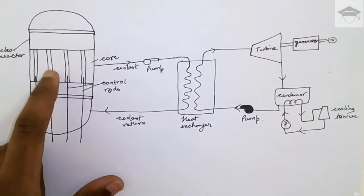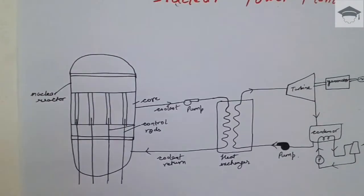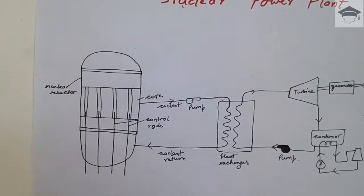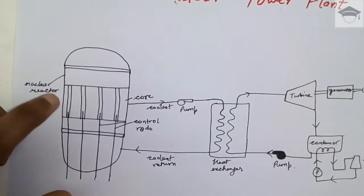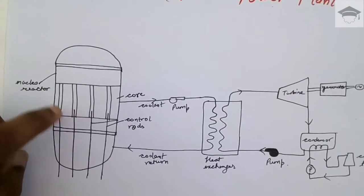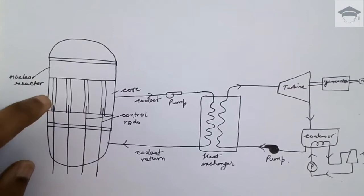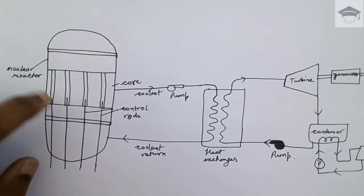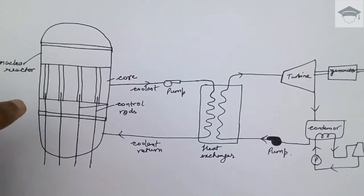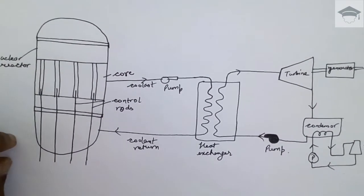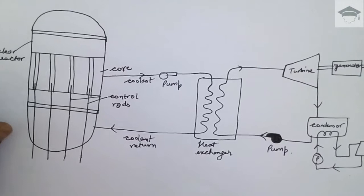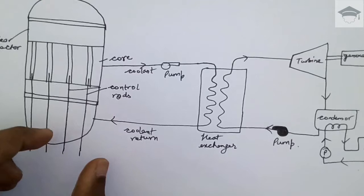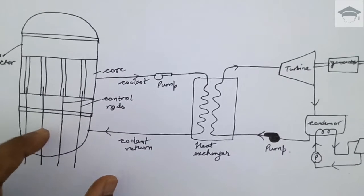Here a fissile fuel is used such as uranium-235 or uranium-238. By nuclear fission reaction, the heavy elements such as uranium-235 split into lighter elements such as thorium and strontium with the release of neutrons as well as excess binding energy.